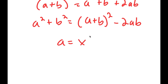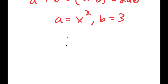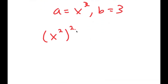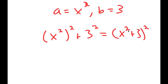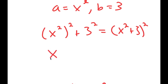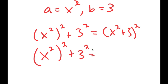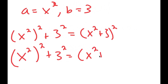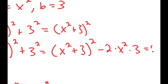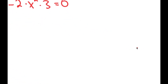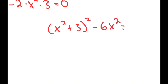So this means that a is equal to x squared and b is 3. Going back, I get x squared to the power of 2 plus 3 squared equals (x squared + 3) squared minus 2 times x squared times 3, which gives me x squared plus 3 squared minus 6x squared is equal to 0.